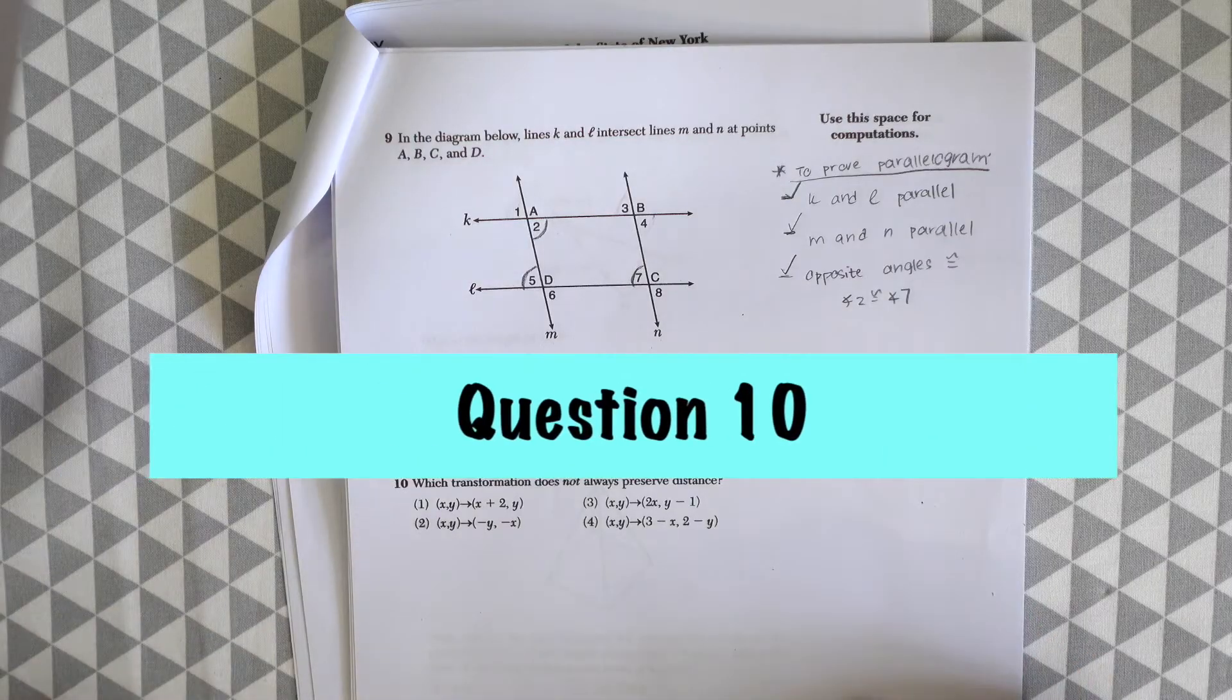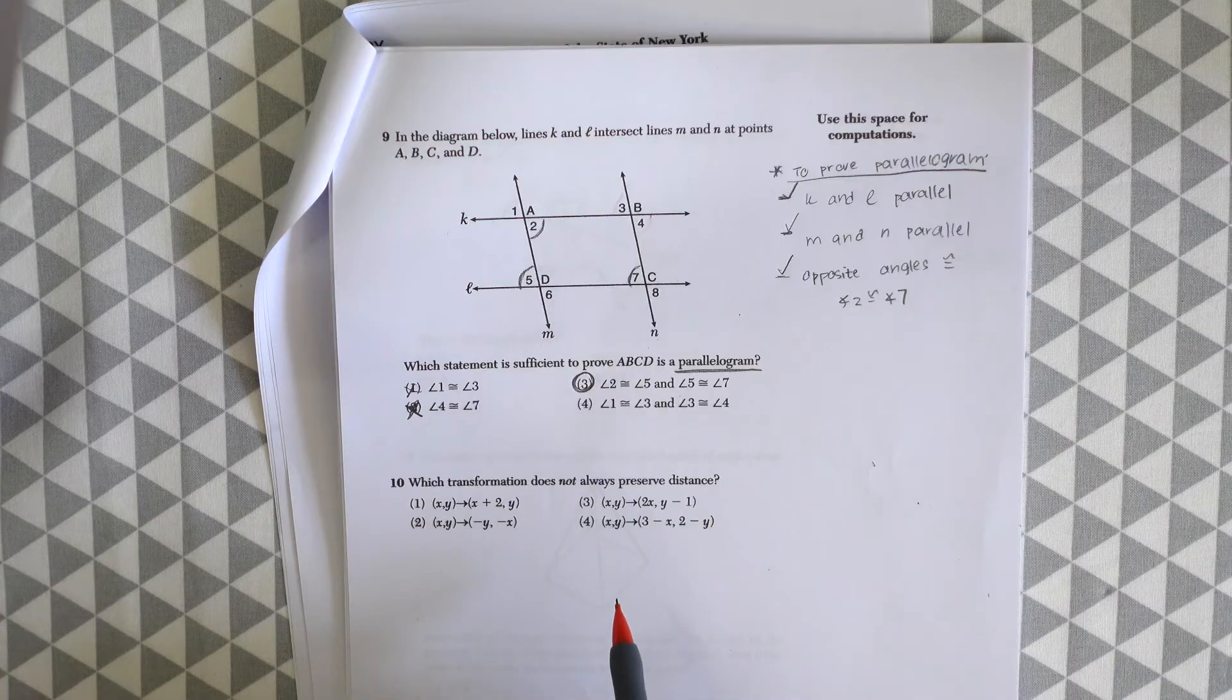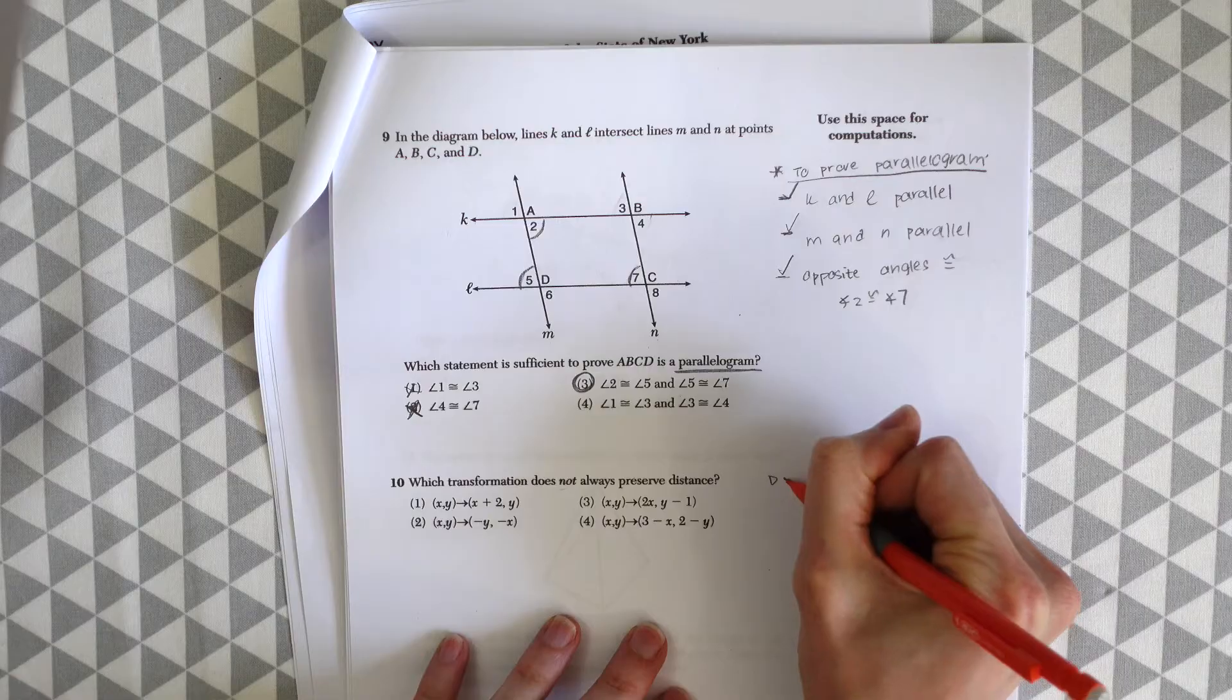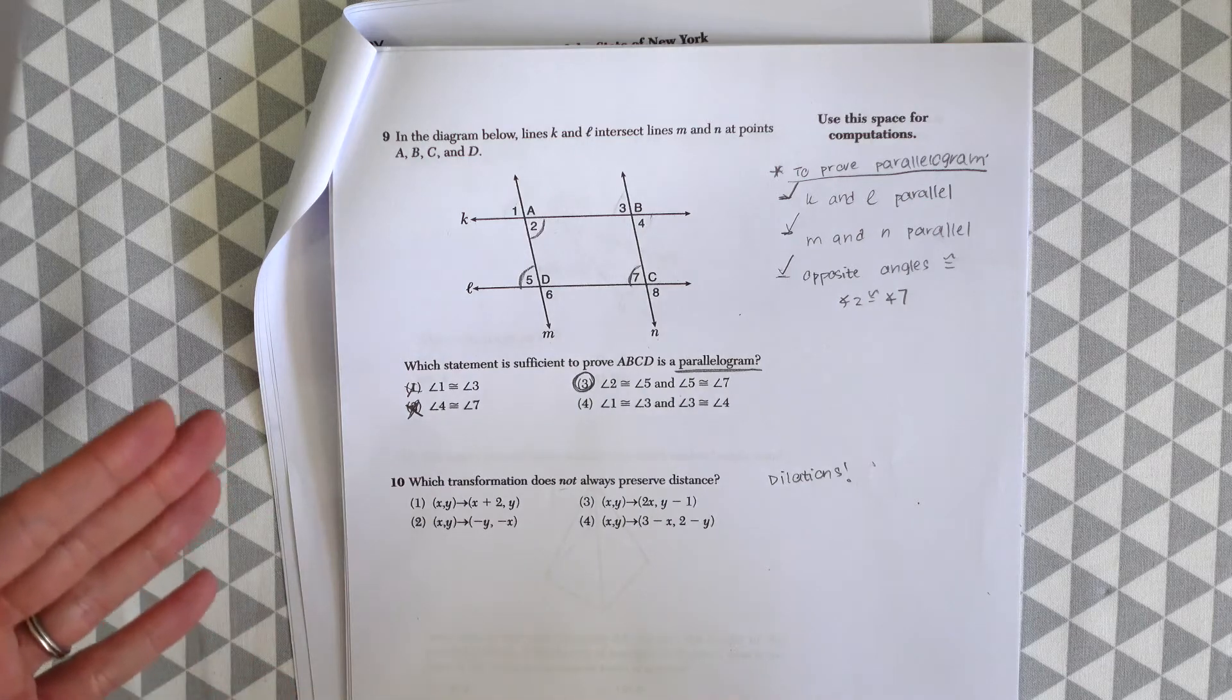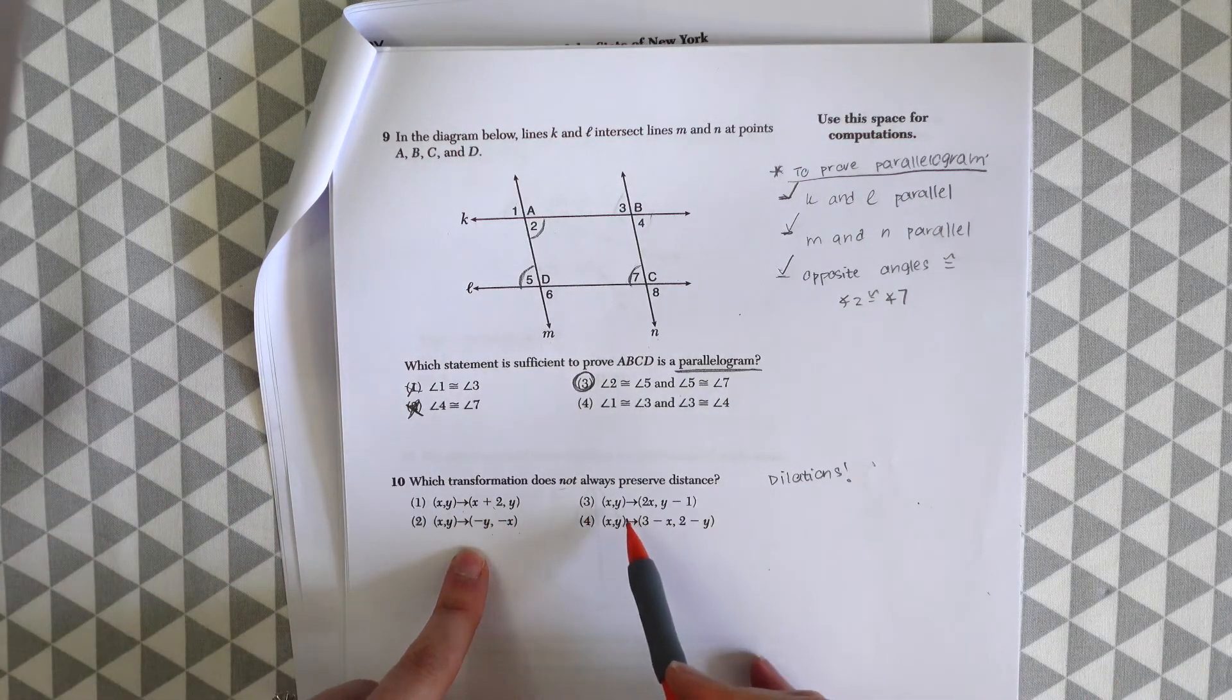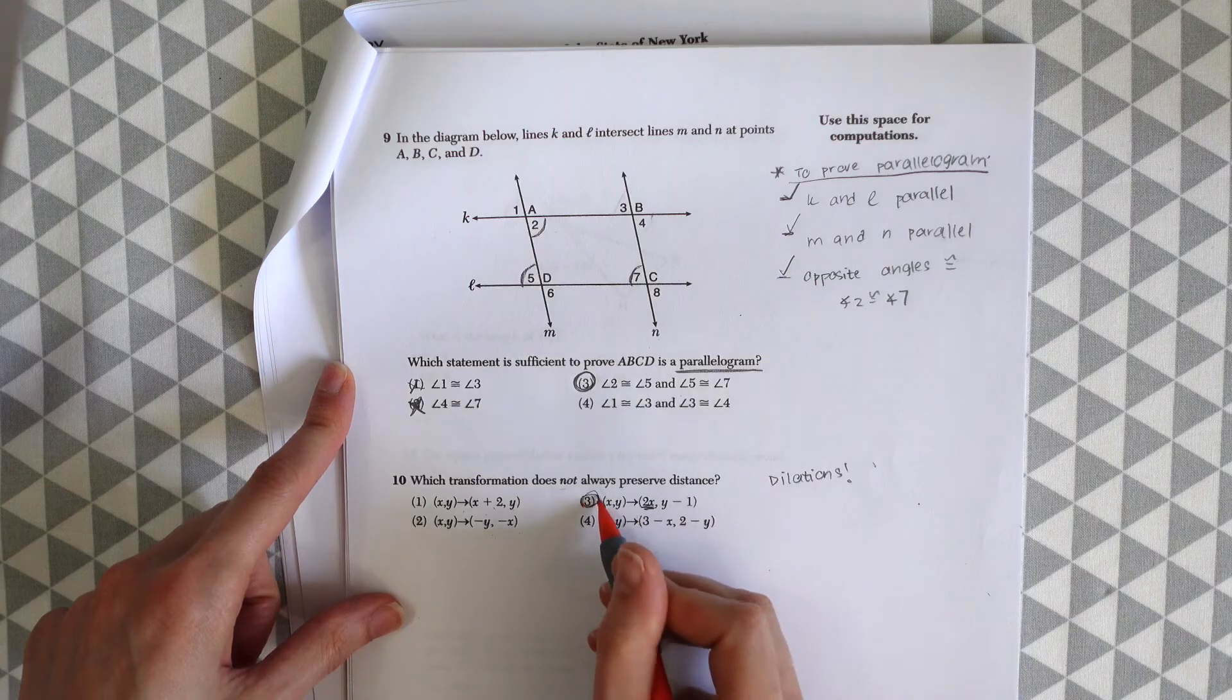So let's try question number 10. Which transformation does not always preserve distance? This should be a good one. Dilation. We know dilations, or should know dilations, don't always preserve distance. So now we just need to look for dilations. And whenever we're involving dilations, we're multiplying. So if we look at these different transformations, we just want to ask ourselves which one has a number that's being multiplied. And that's in choice three only, which is our answer here.